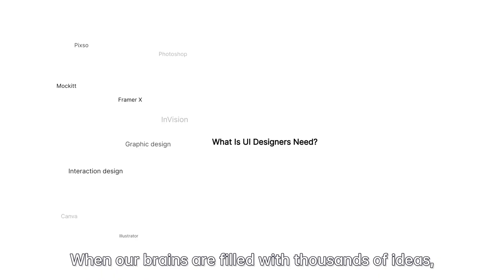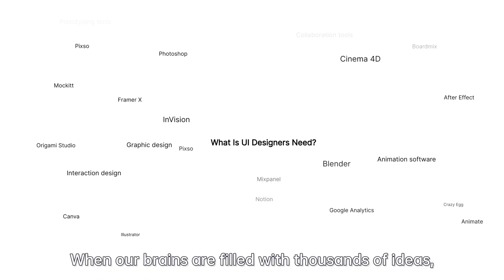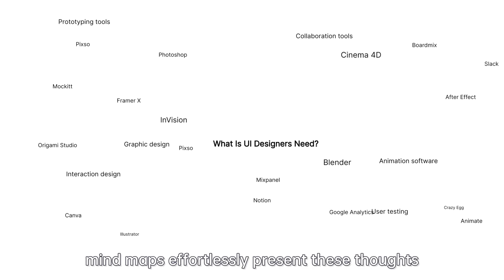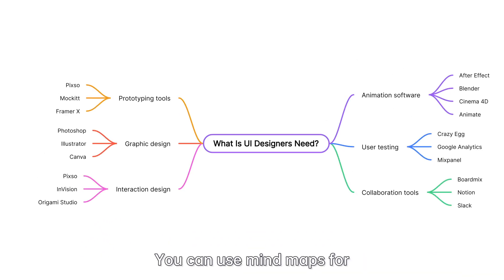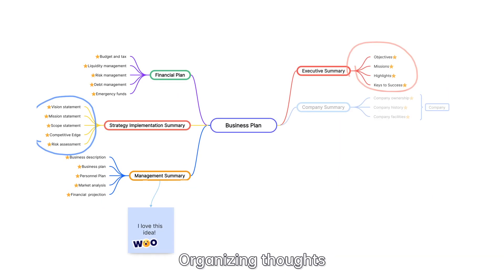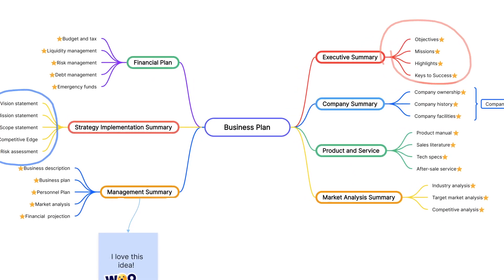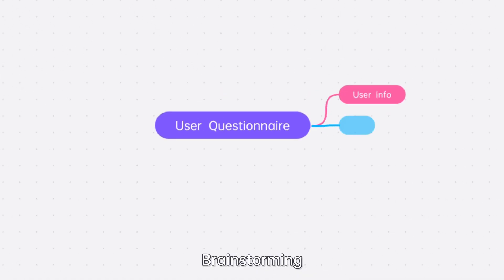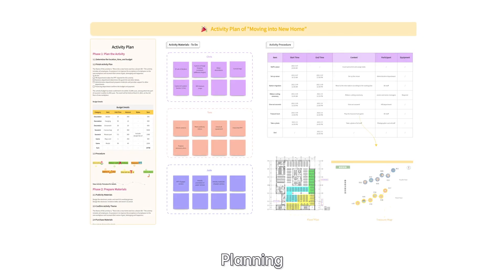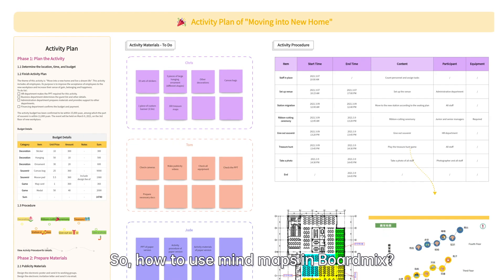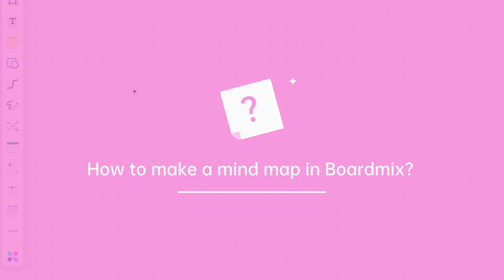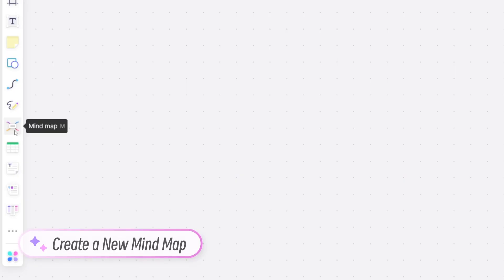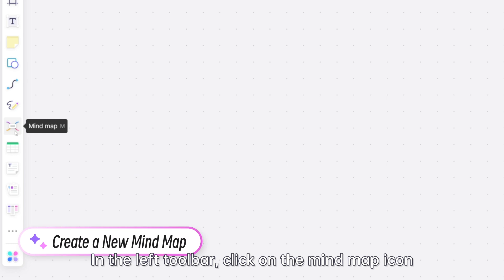When our brains are filled with thousands of ideas, mind maps effortlessly present these thoughts. You can use mind maps for organizing thoughts, brainstorming, and planning. So how do you use mind maps in Boardmix? In the left toolbar, click on the mind map icon.